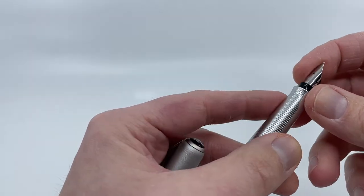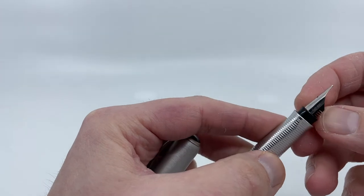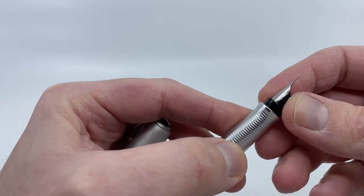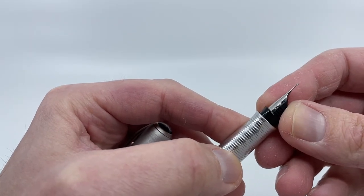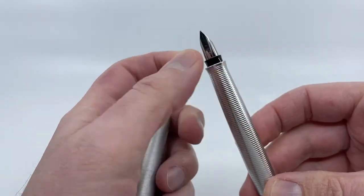And now we have 14 carat gold nibs with rhodium plating. And you can see here on the right shoulder, it indicates the gold purity of the nib.